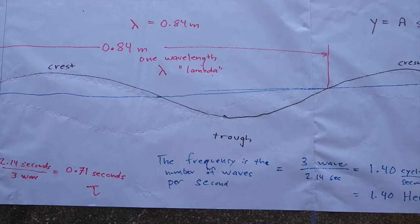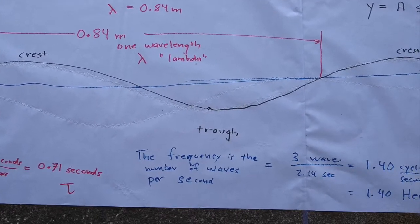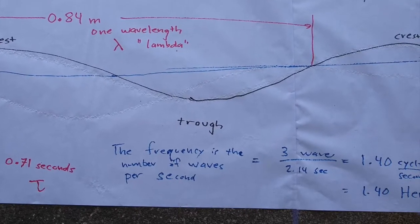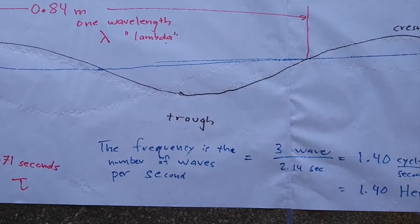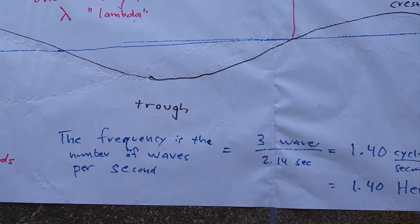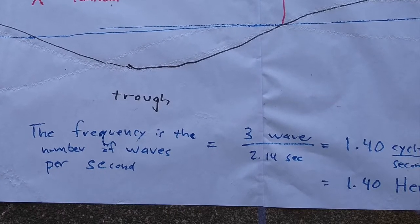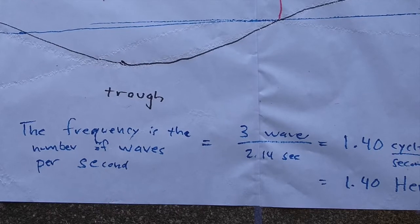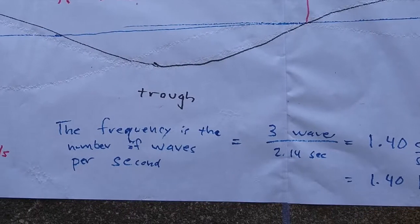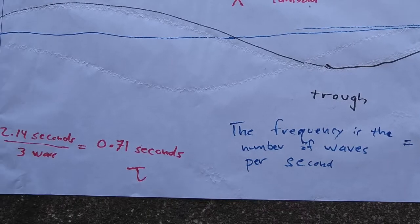The frequency is the number of waves per second. It's the reciprocal of the period. Three waves divided by 2.14 seconds means that I am making 1.4 waves per second, 1.4 cycles per second. Or in physical science, we use the unit hertz, 1.4 hertz. The frequency of the wave is 1.4 hertz. The period of the wave is 0.71 seconds.